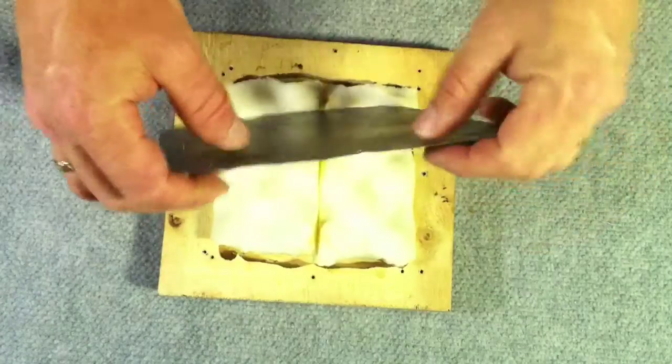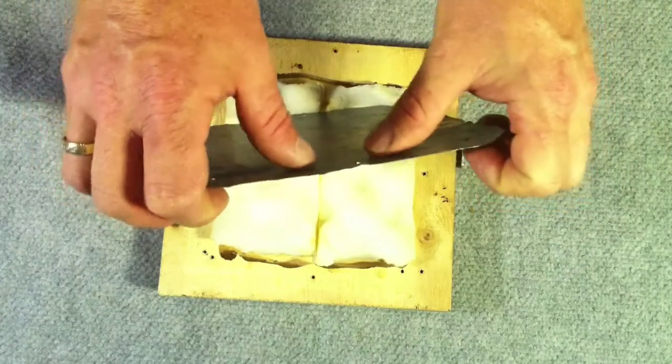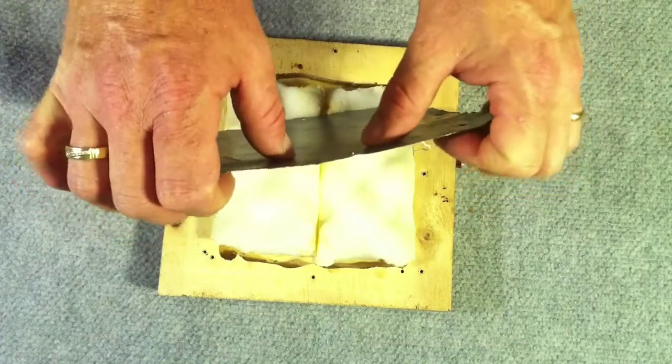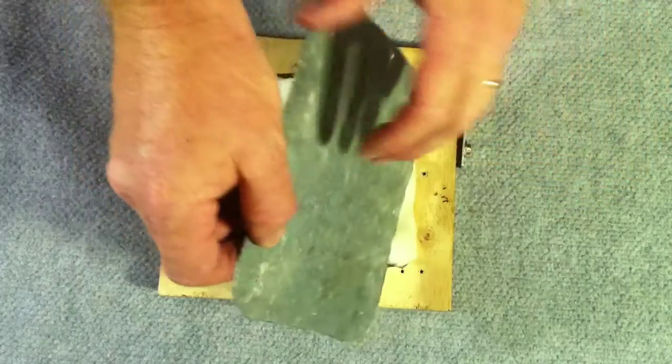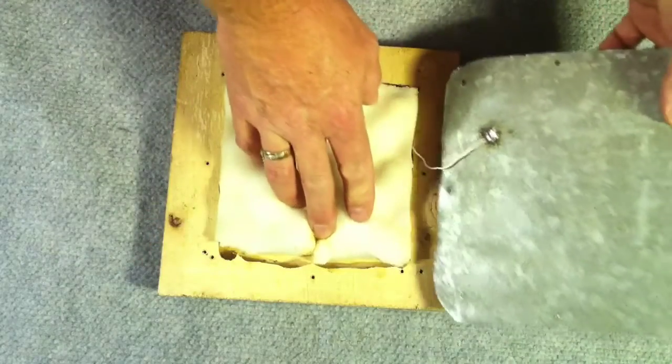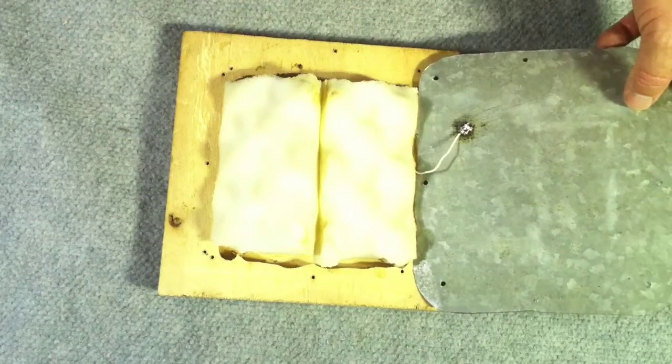This steel plate is a piece of galvanized steel sheet that is reasonably flexible. It's less than one millimeter thick. Any piece of steel plate will do as long as when you stomp on it it moves.